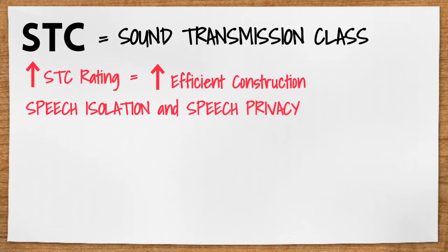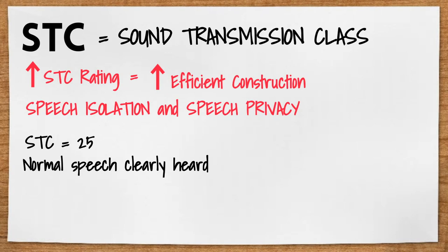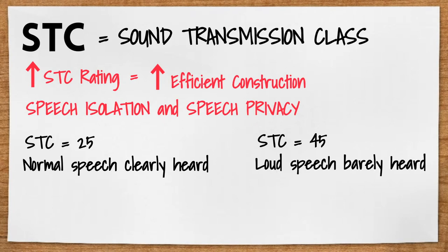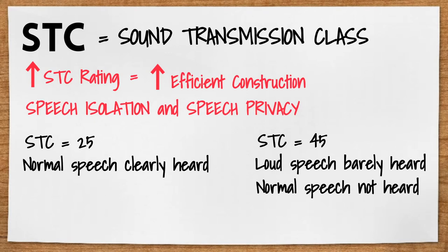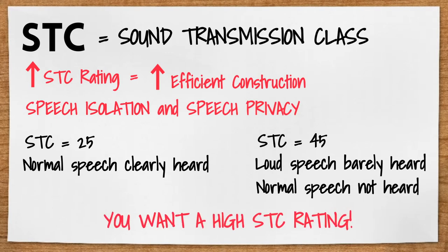Here's an example. An STC rating of about 25 typically means that normal speech can clearly be heard through the assembly or wall, while an STC rating of about 45 typically means that loud speech can barely be heard and normal speech cannot be heard at all. Let's say you were designing an office space and the conference room would be holding meetings regarding classified information — you would want to make sure that the STC rating of those conference room walls is as high as possible.